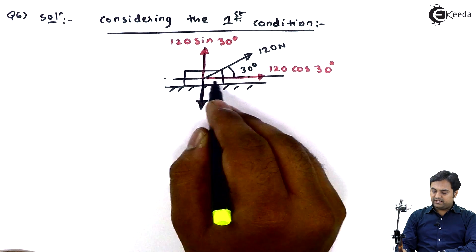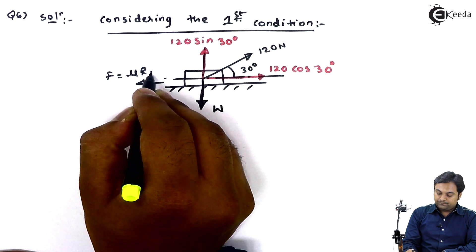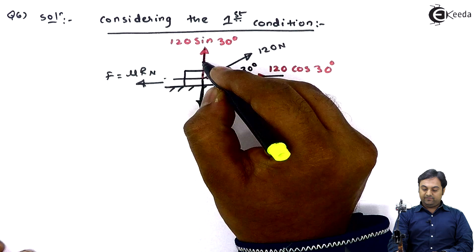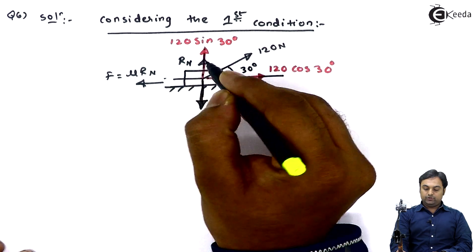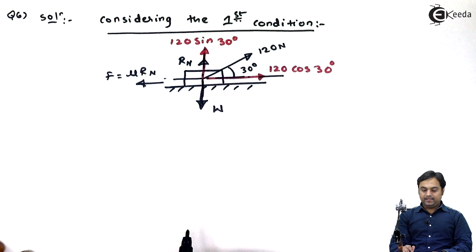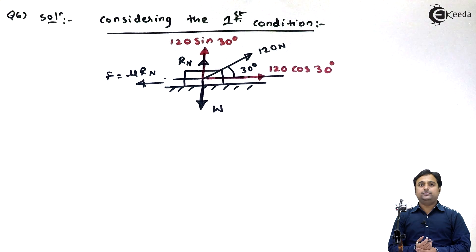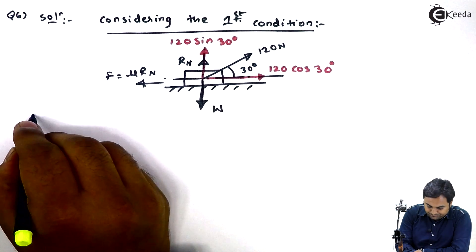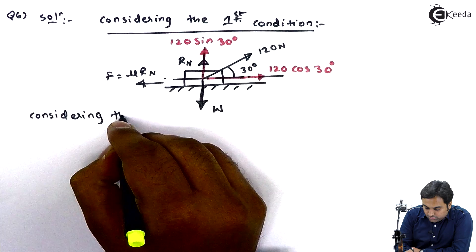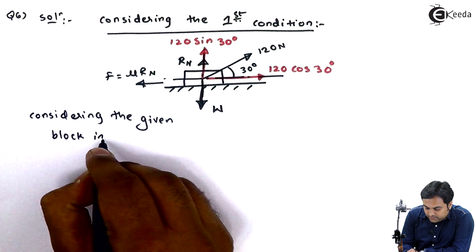Because of 120 cos 30, the block will try to move towards the right, but friction force will try to bring it towards the left. With W acting downward, the normal reaction RN acts upward. Along the vertical we have 120 sin 30 and RN opposing W. We now consider the block to be in limiting equilibrium.